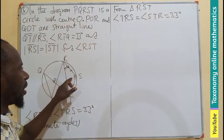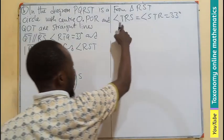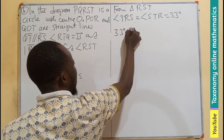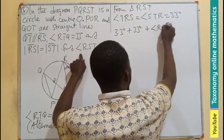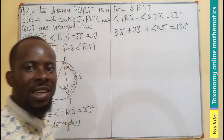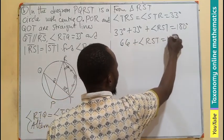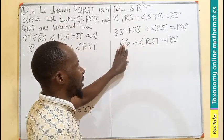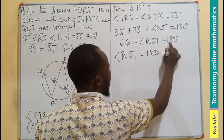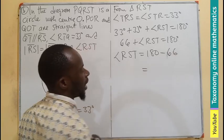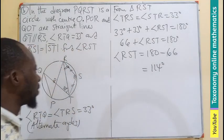The sum of angles in a triangle is 180 degrees. So angle RST plus 33 plus 33 equals 180. The two base angles sum to 66 degrees, so angle RST equals 180 minus 66, which gives angle RST equals 114 degrees.